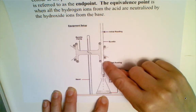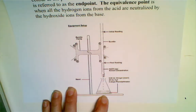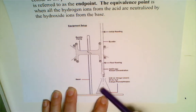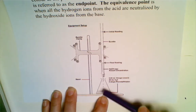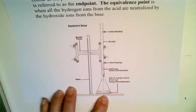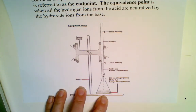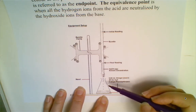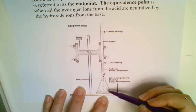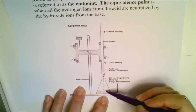We would titrate the acid with a base until what is called the equivalence point is reached. That is when all of the moles of acid have been neutralized by moles of base, and you have a visual cue known as the endpoint. The endpoint is determined by adding an indicator like phenolphthalein or bromothymol blue, which will turn color when the equivalence point has been reached.